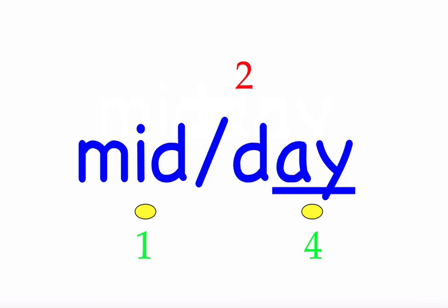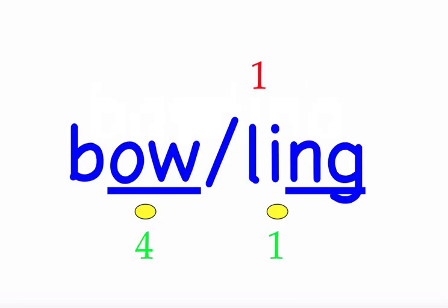The next word is 'bowling.' Let's go bowling. First syllable 'bow' — two sounds, B-O-W. Second syllable 'ling' — three sounds, L-I-N-G. Mark the word. Bowling.